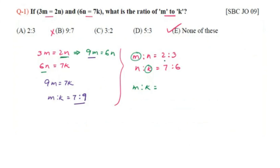Verifying: simplifying the ratio gives 7 times 9. So 7:9 is the answer.